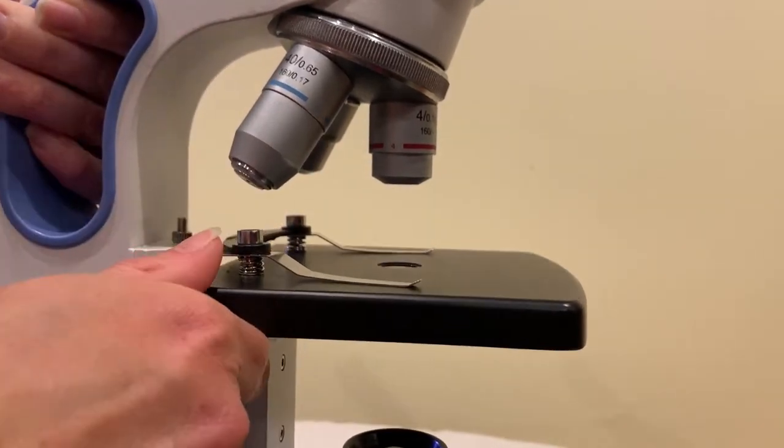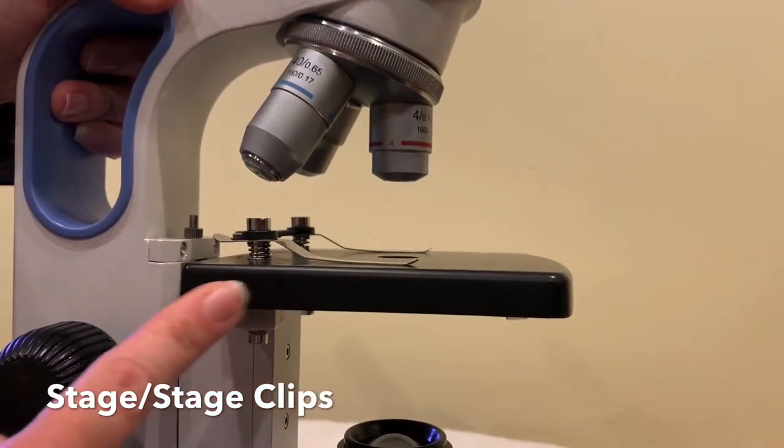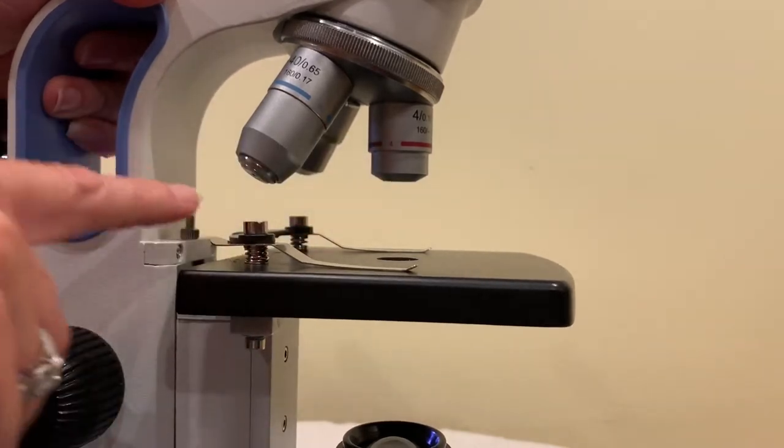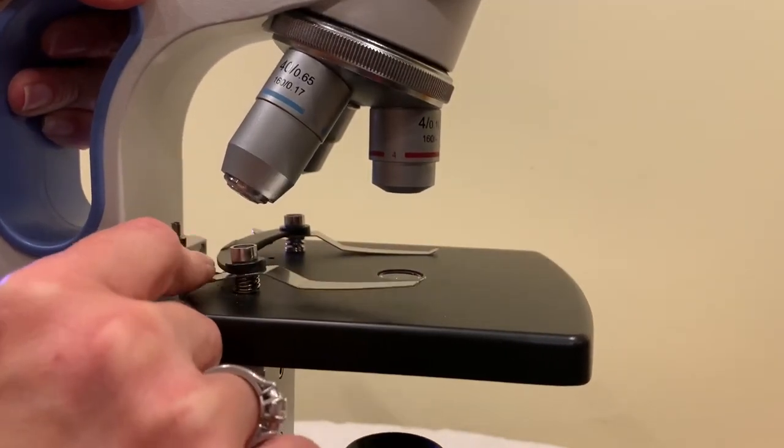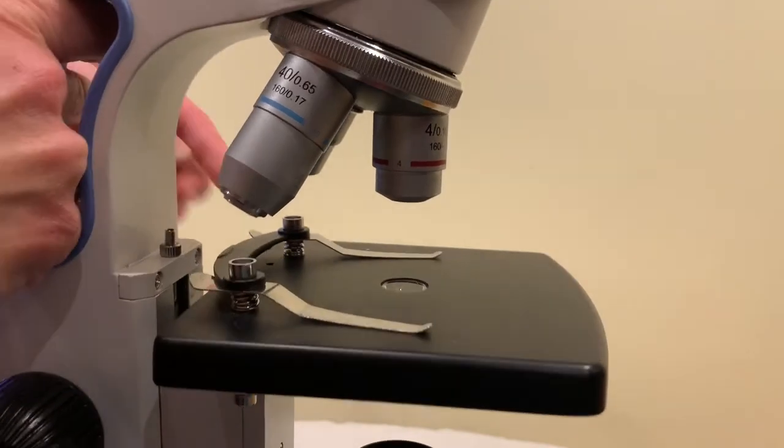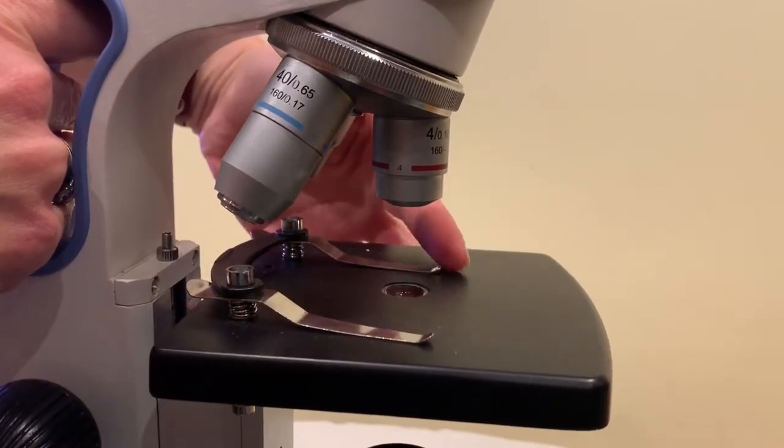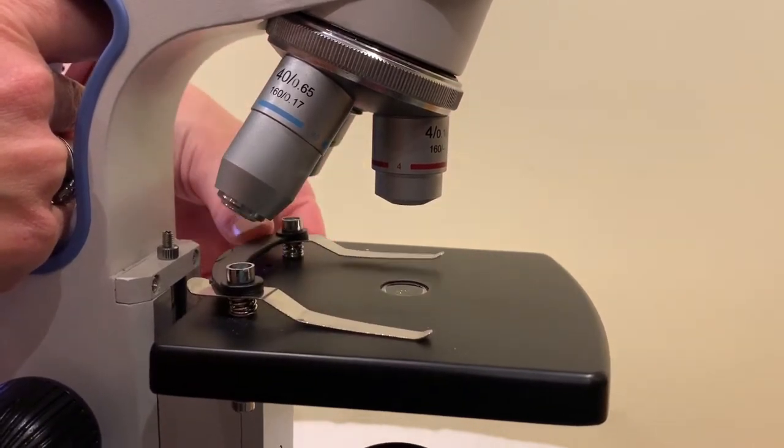Next, since we're right here, this is the stage. The stage is where we put our slide. These are stage clips. See they're just little clips and when you put your slide on the stage, which I'll show you later, the slide goes under the clips and the clips hold them in place.